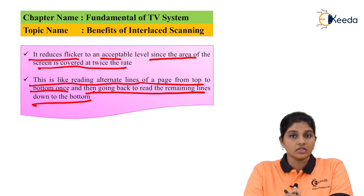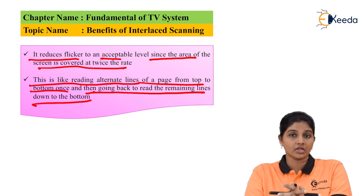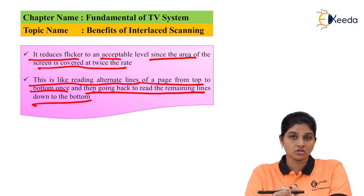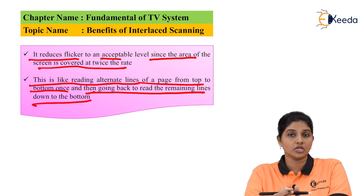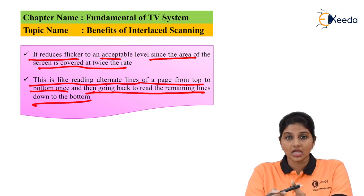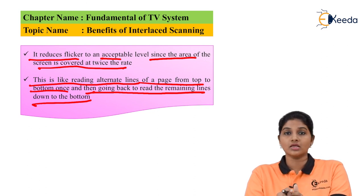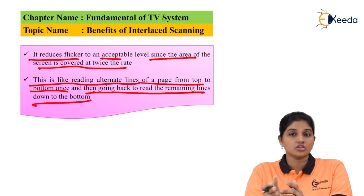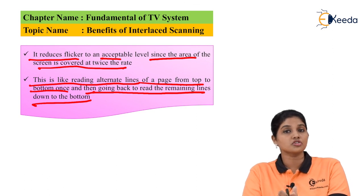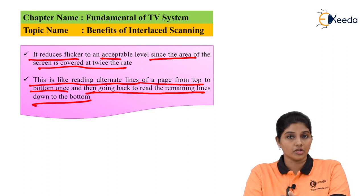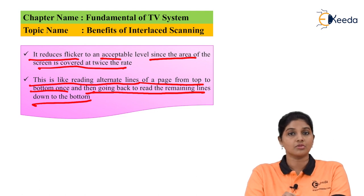In summary, this video covered the introduction to scanning used in television systems. The two types of scanning are interlaced scanning and progressive scanning. Interlaced scanning has a flickering effect on screen, but this is reduced by adjusting the frame rate. Progressive scanning, used in HDTVs, reproduces the entire picture on screen at once, resulting in much less flickering compared to interlaced scanning. The scanning process takes place with the help of an electron beam to produce pictures on the screen.